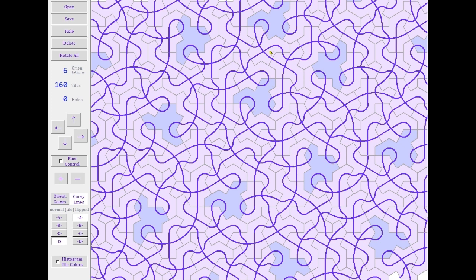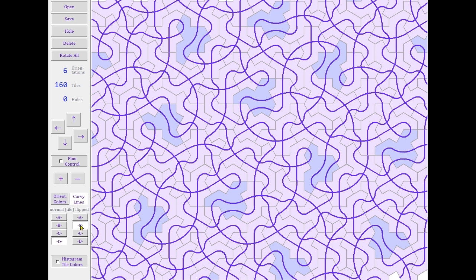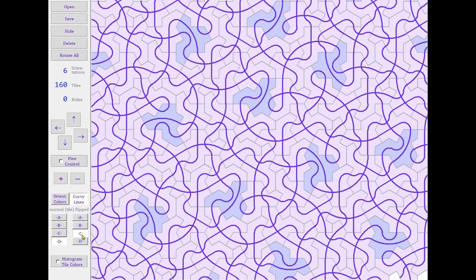Now these looping lines seem to go on forever. Flipped tile B. Not so many loops. Flipped tile C. And flip tile D. Both with that same pattern.